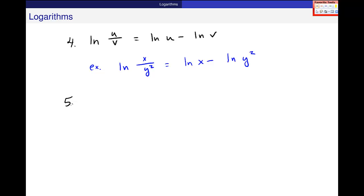This fifth property, natural log of u to the r power. If I have a power inside a log, there's this amazing property where this can come out front, just pop right out front and become a coefficient. And what's left inside is just u.